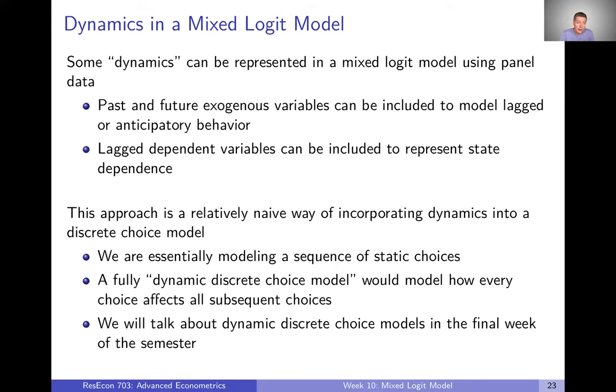When you do this, you can incorporate some quote unquote dynamics and I'm putting dynamics in air quotes here because it's not what we would call a fully dynamic discrete choice model, but some kind of intertemporal things can be included here. We can include past or future exogenous variables to model either lagged or anticipatory behavior. So our X's could be things from, even though we're in time period T, we could think about choosing X's from either before T or from after T. We can include lagged dependent variables. So what did you choose the last period can be included to represent some kind of state dependence.